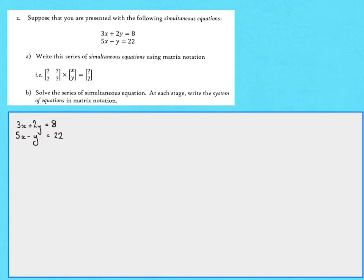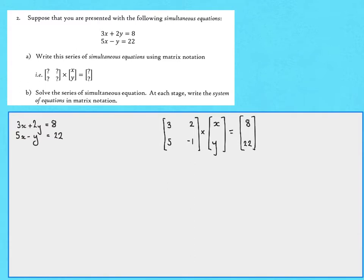It's actually quite simple — all we need to do is write down the matrix as the coefficients on x and y in each of our expressions. So our matrix is [3, 2; 5, -1], which when multiplied by [x; y] is going to be equal to [8; 22].